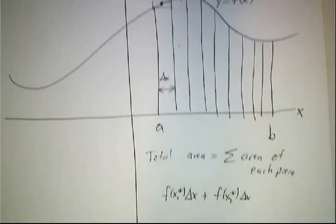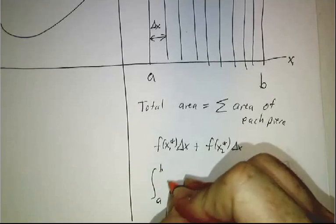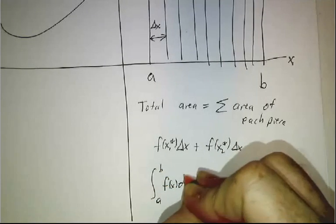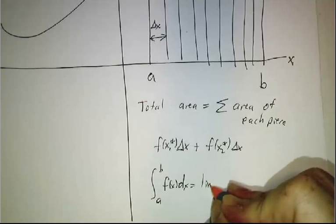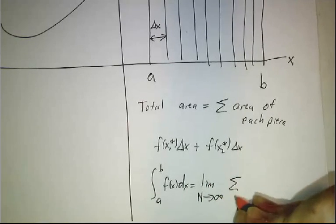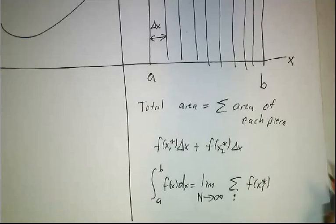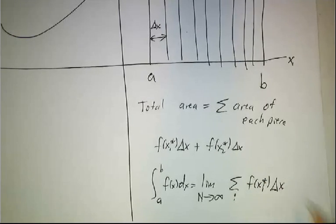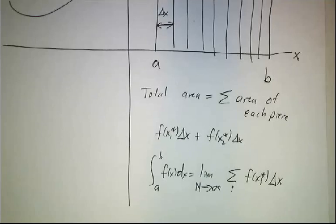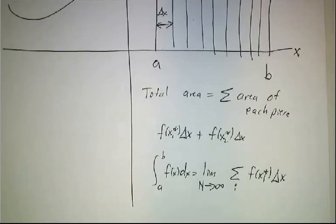And so by definition, the definite integral is the limit as you chop things up into more and more pieces of the sum over all the pieces of the value of the function at a particular point times the width of that piece. Now that sounds like a mess. You can do it by hand for some really simple functions like x or x², but doing this procedure for a general function can be really, really hard.